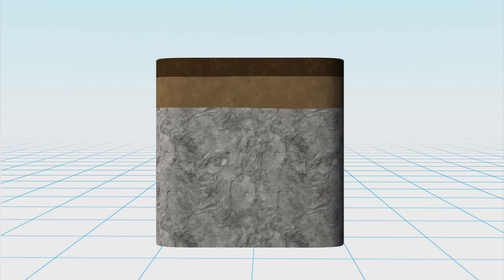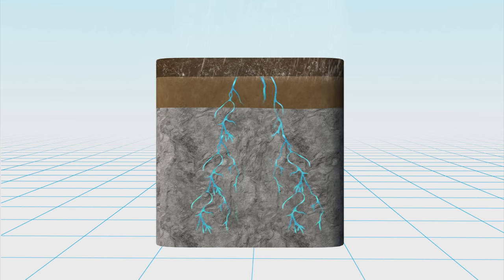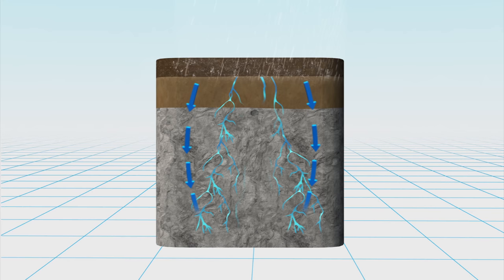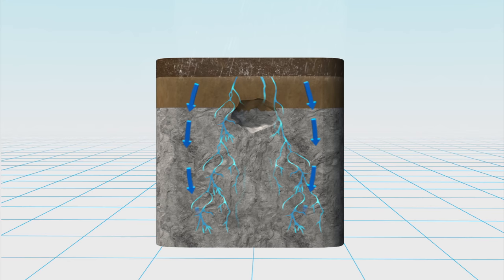Sinkholes typically form in karst landscapes where acidic groundwater runs into the bedrock, dissolving the rock while creating cavities and caves that can collapse.